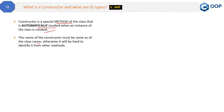The reason the constructor name must match the class name is that if the name were different, it would be hard to identify it from other methods. C# has mandated that the constructor name be the same as the class name. Now the next part is: what are the types of constructors?